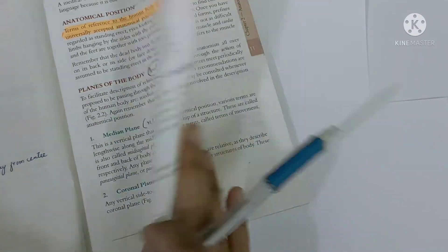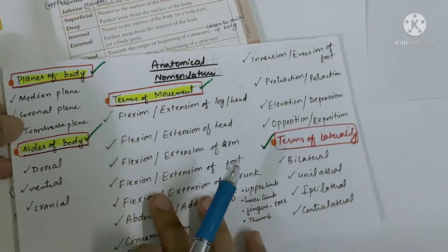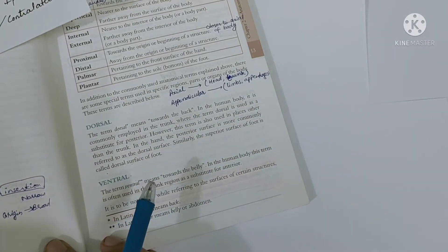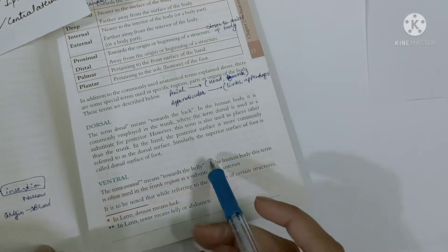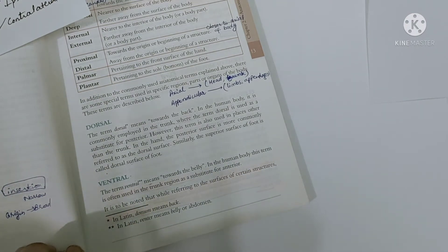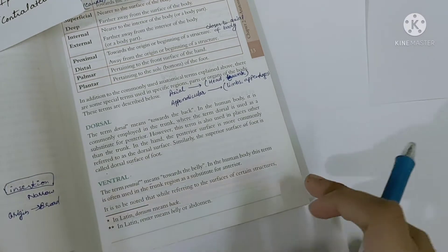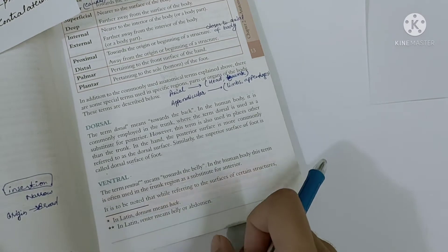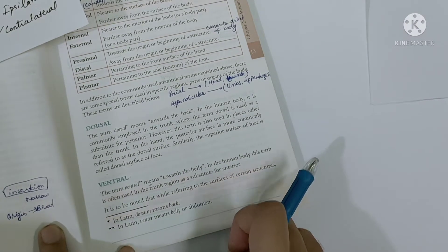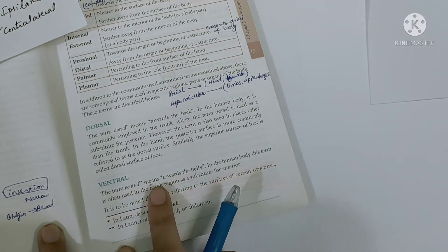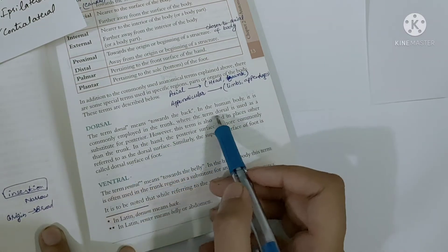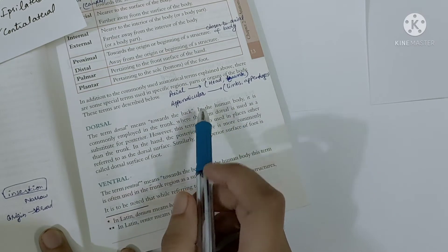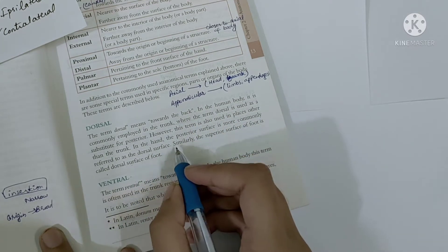Now we will study the sides of the body, which are the dorsal, ventral, and cranial sides. Dorsal is towards the back — the back side of the body. The dorsal side refers to the back, and the ventral side is used as a substitute for the anterior — meaning the front. Dorsal is used as a substitute for posterior, meaning the back side.